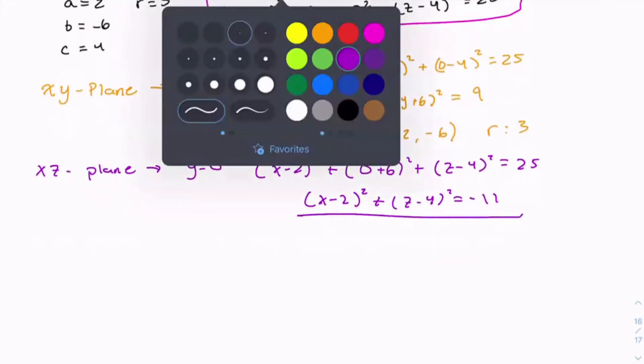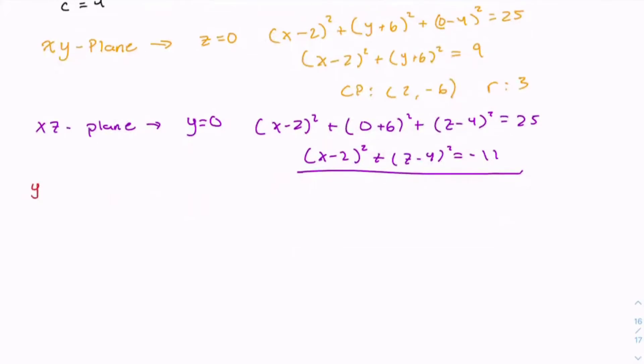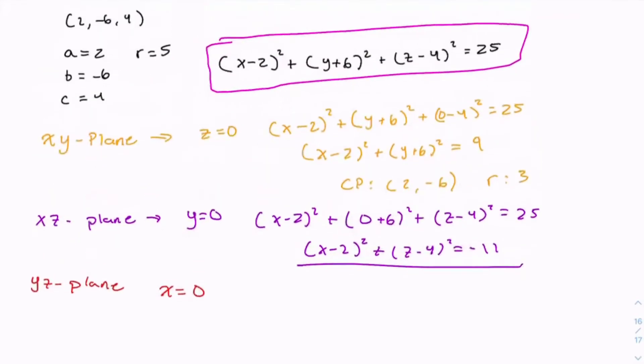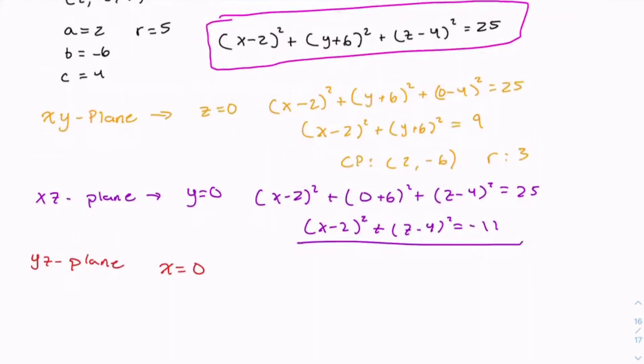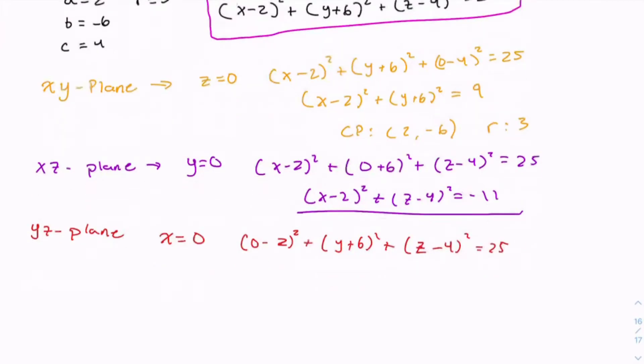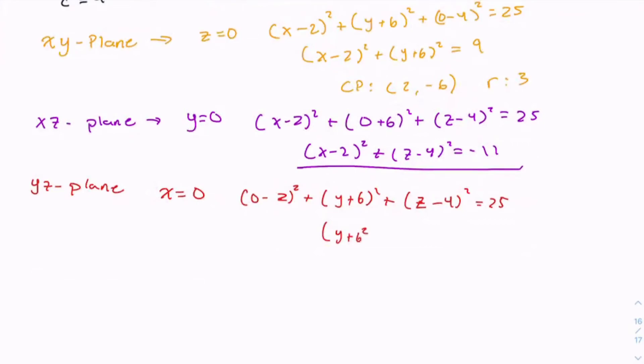Alright, so let's move on to the intersection of the yz-plane, meaning that x equals 0. And let's plug x equals 0 into the sphere equation. So (0 - 2)² + (y + 6)² + (z - 4)² = 25. Simplify this. We get (y + 6)² + (z - 4)² = 21. Radius being square root of 21. This is a circle.